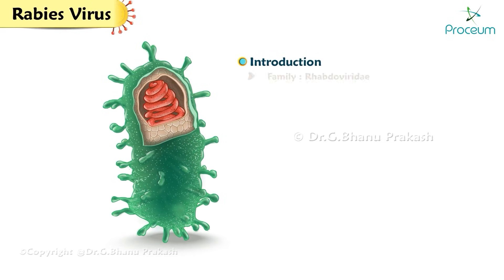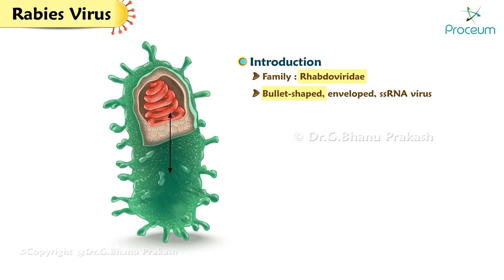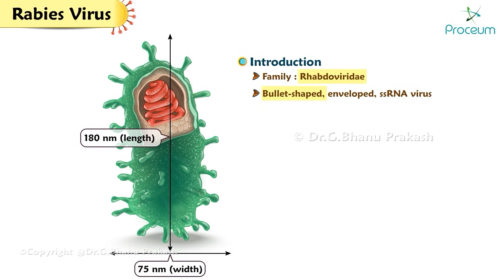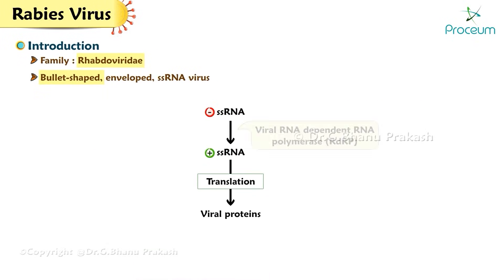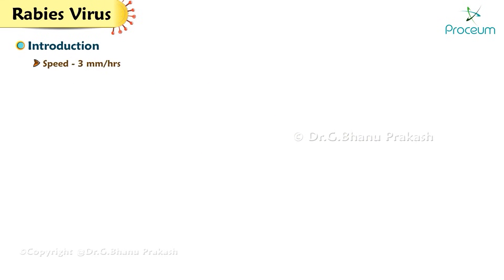Introduction: Rabies virus belongs to the family Rhabdoviridae. It is a bullet-shaped, enveloped, single-stranded RNA virus. The size of the rabies virus is 180 nanometers in length and 75 nanometers in width. The negative-sense RNA is converted to positive sense through RNA polymerase. The speed of the rabies virus is 3 millimeters per hour.